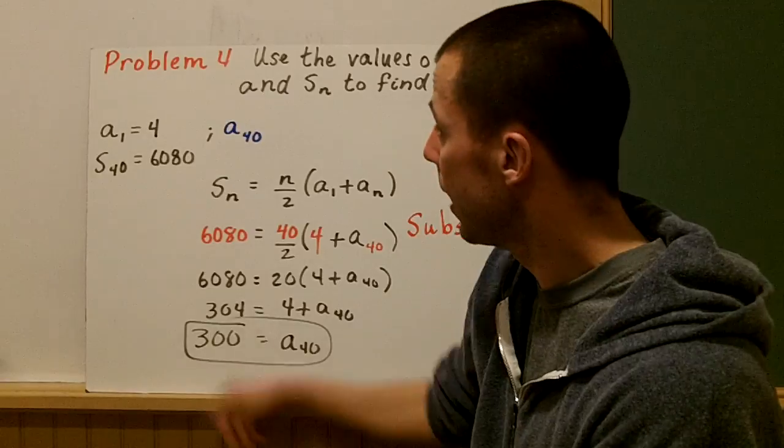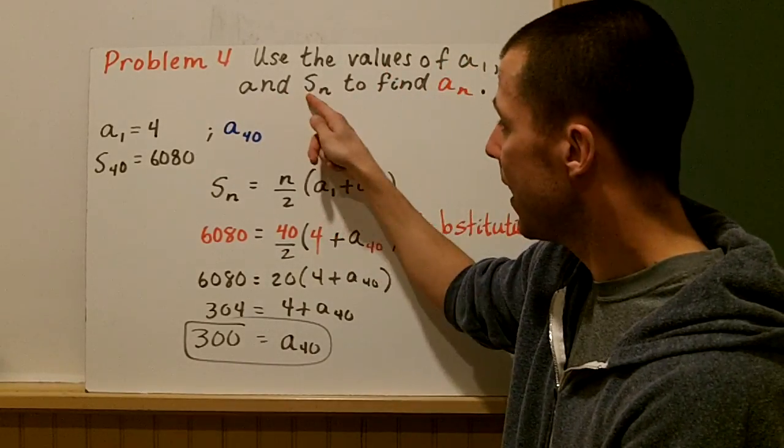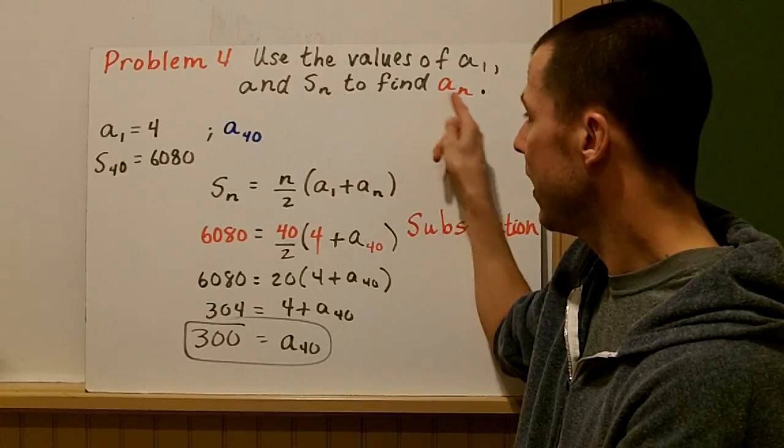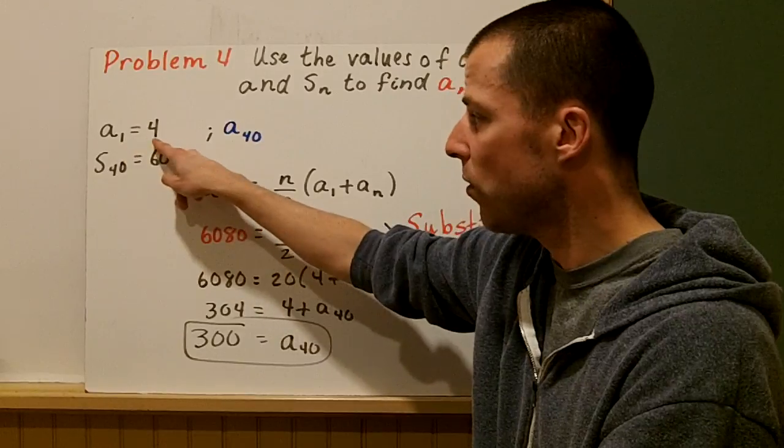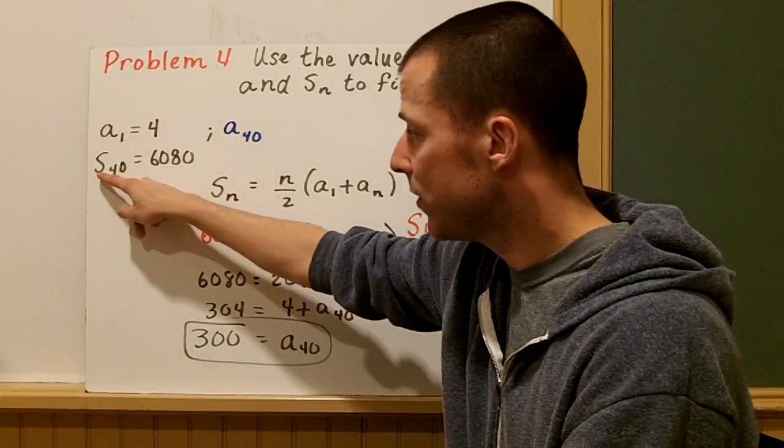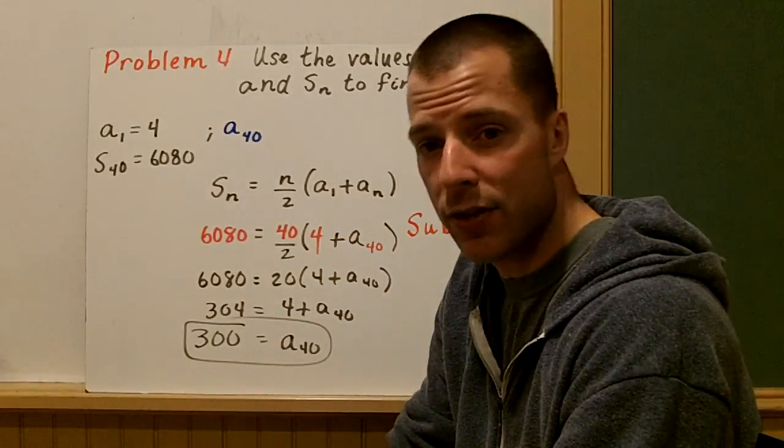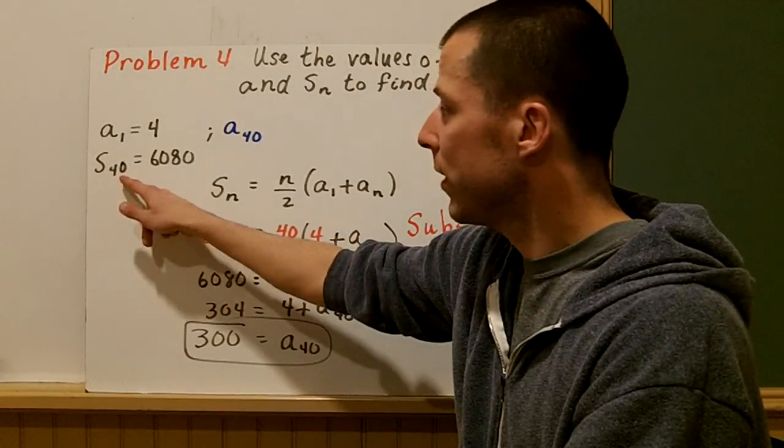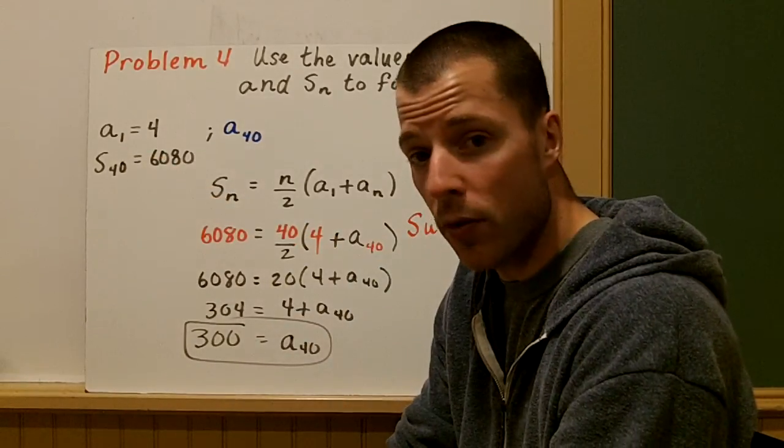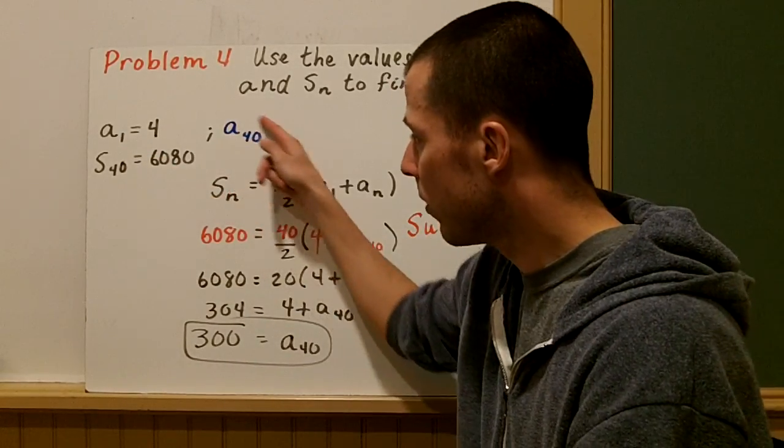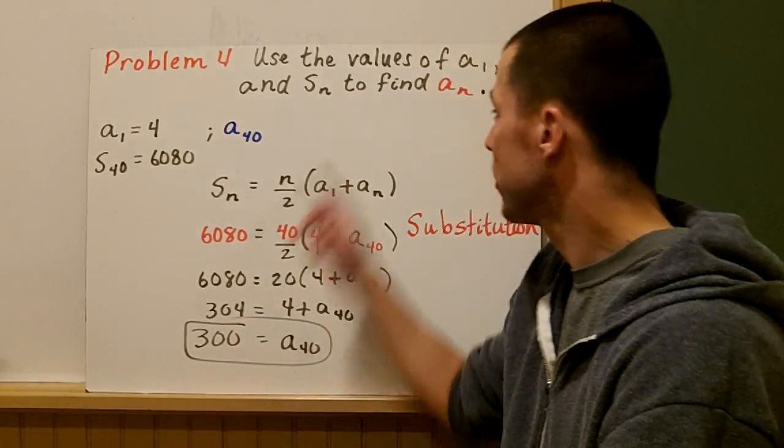Last little example. Problem number four. Use the values of a_1 and S_n to find a_n. So I've given you a_1, that's 4. And I've given you S_40 equals 6080. So what that tells me is that there's 40 terms and I'm starting at the number 4. So we're really looking for a_40, that last term, a_n.